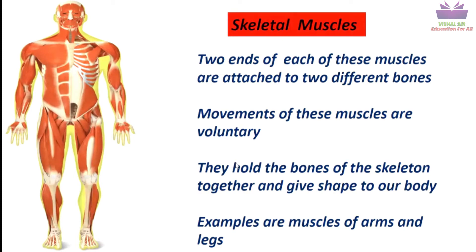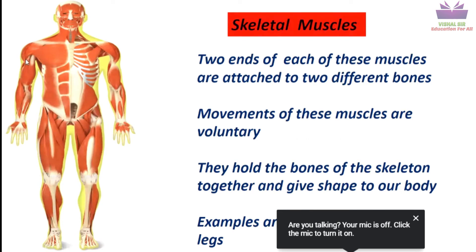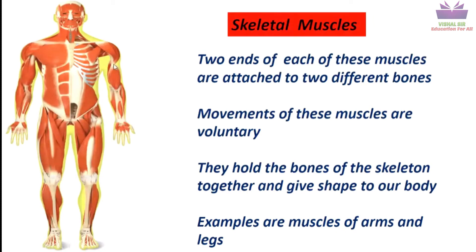First is the skeletal muscle. Two ends of each of these muscles are attached to two different bones. If you look closely at these muscles, one end is attached to one side and the other end to the other side — for example, the muscle on the shoulder. So they are attached to two different bones, and movements of these muscles are voluntary. They hold the bones of the skeleton together and give shape to our body. These muscles are found all around our body, in the hands and legs, and can be moved according to your wish. Skeletal muscles are voluntary muscles.